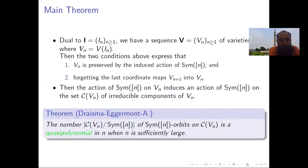Dual to the sequence of ideals, we have a sequence of varieties, where each V_n is the variety defined by the ideal I_n. These varieties satisfy two conditions: since I_n is preserved under the action of Sym_n, the variety V_n is preserved by the induced action of Sym_n. And since I_n is contained in I_{n+1}, forgetting the last coordinate maps V_{n+1} into V_n.